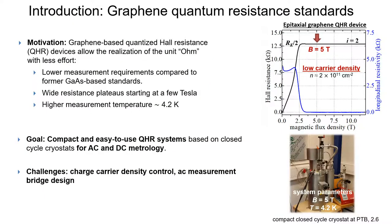The main motivation of graphene QHR devices is the realization of the unit ohm with less effort compared to gallium arsenide-based resistance standards. The goal is to use the advantages of the very broad resistance plateau and the higher measurement temperature to develop compact and easy-to-use QHR systems based on closed-cycle cryostats that operate not only at direct current but also at alternating current. Still challenging is the control of the charge carrier density of the graphene devices and the bridge design for measurements at alternating current. However, as you will learn in my talk and in those of my colleagues, we are making good progress in these points.